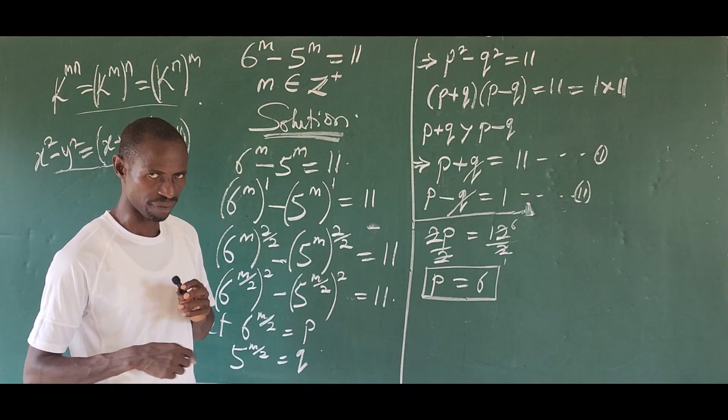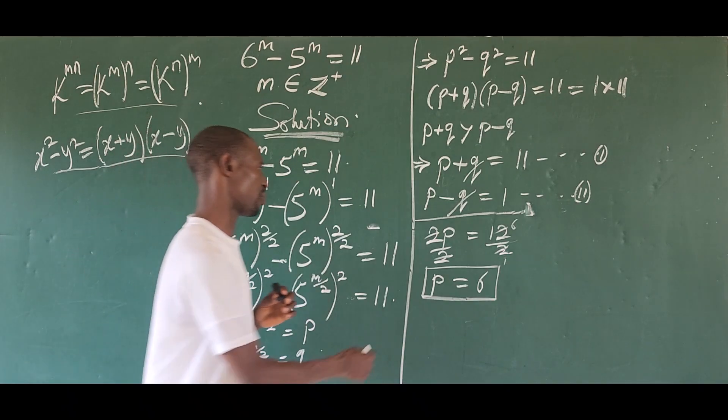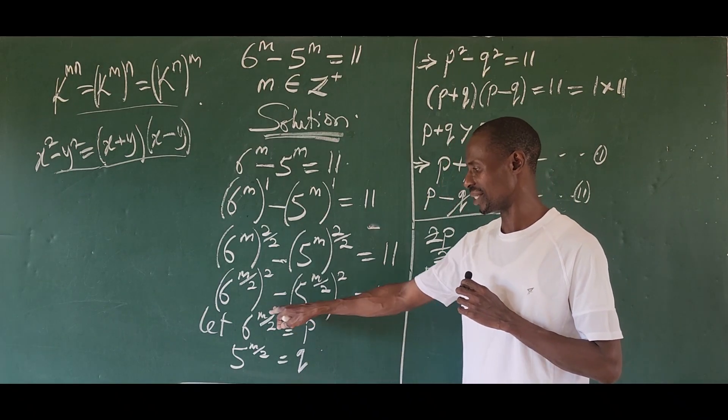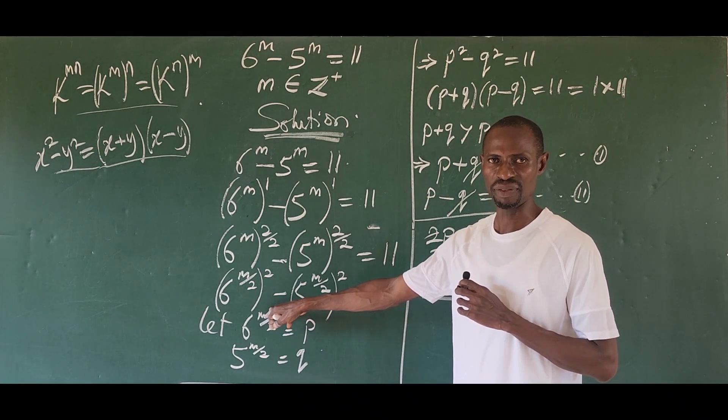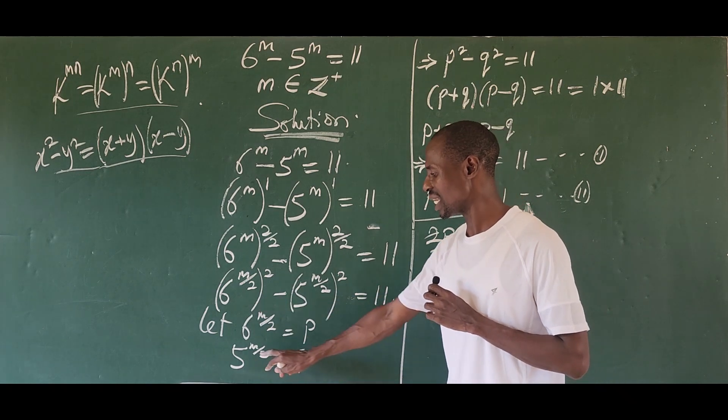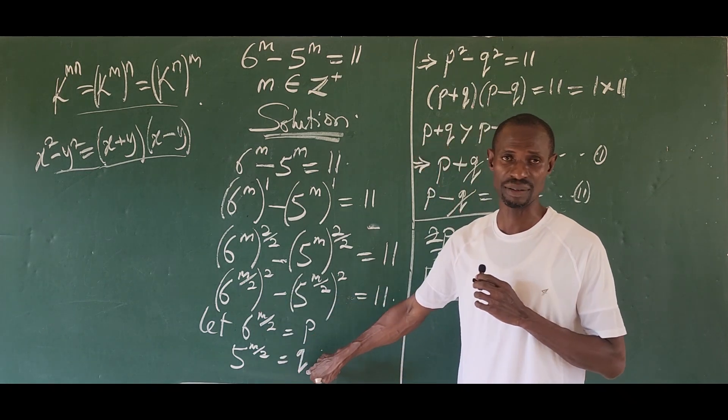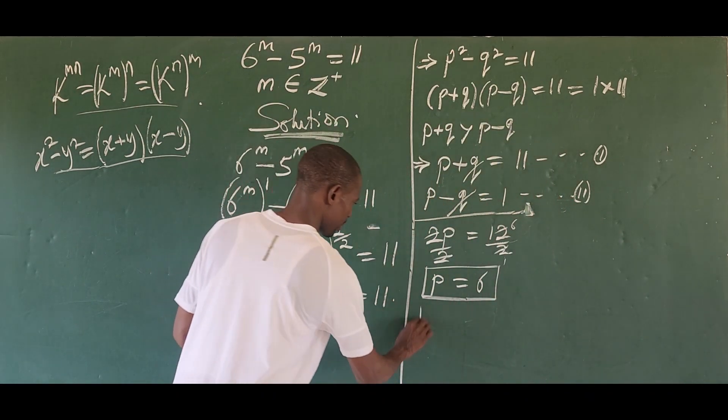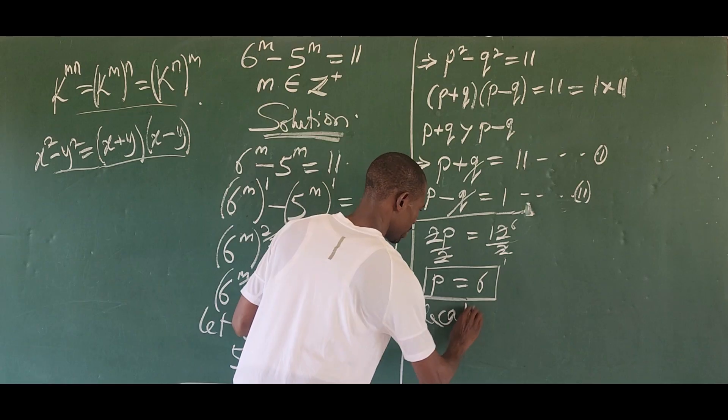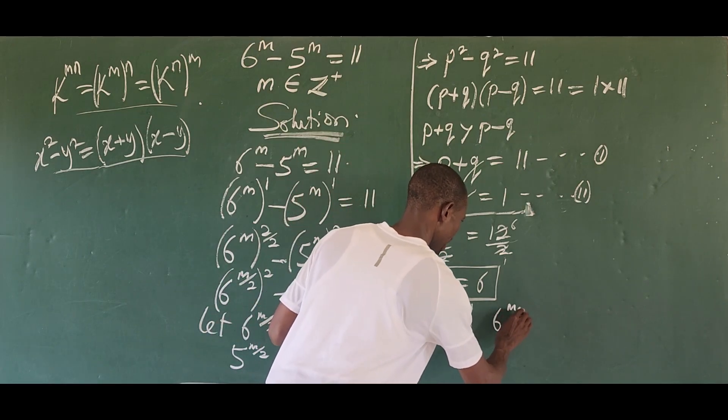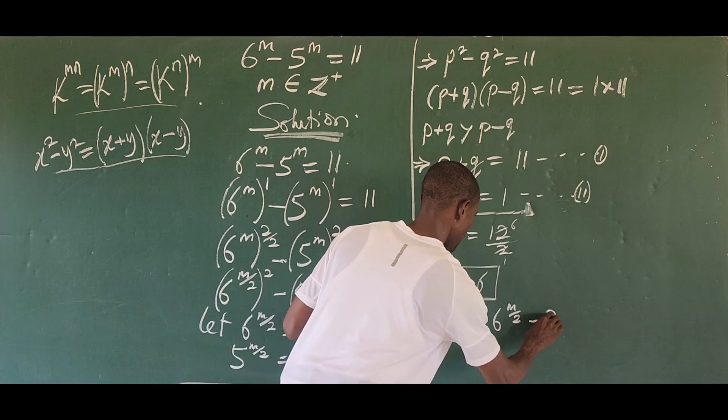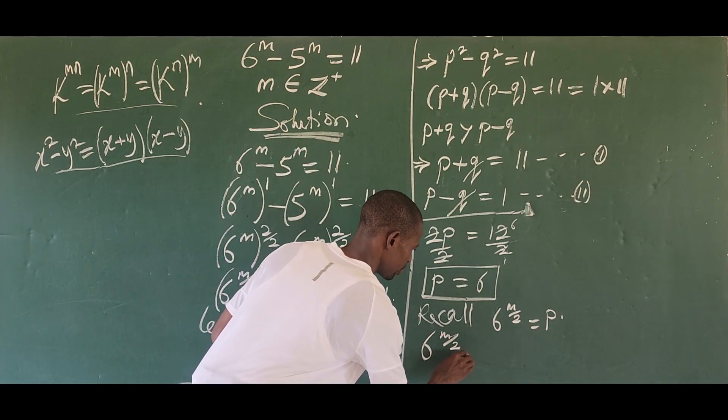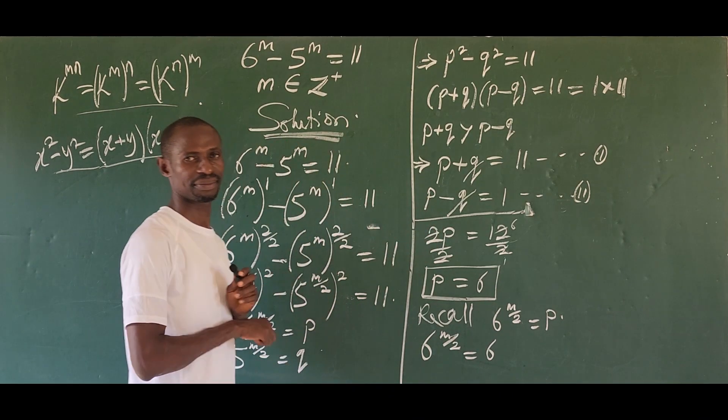Going ahead to solve for the value of q is of no use. Why? Because we can substitute this value into this substitution we made here and we get the value of m from there. And if we get the value of m from here, the value of m is the same thing we are going to get from here if we go ahead to solve for the value of q from this place here. So with this, let's put this into this equation. So we now record that our 6 to the power of m all over 2 is equal to p. So substituting this is going to give us 6 to the power of m all over 2 is equal to p is what? 6.